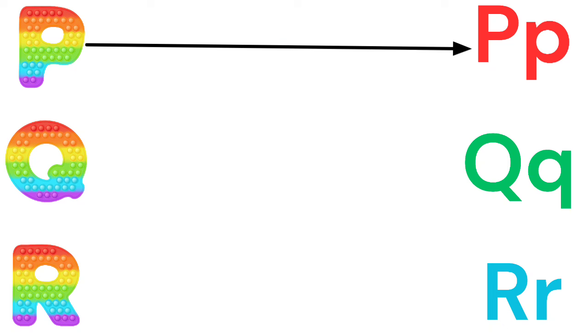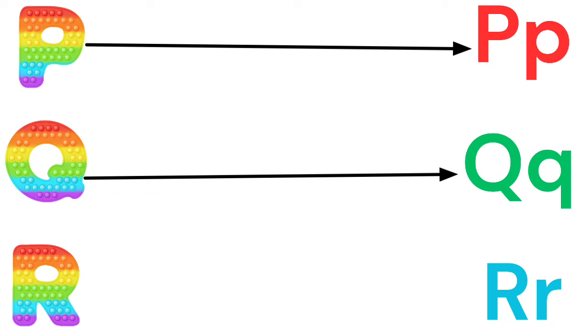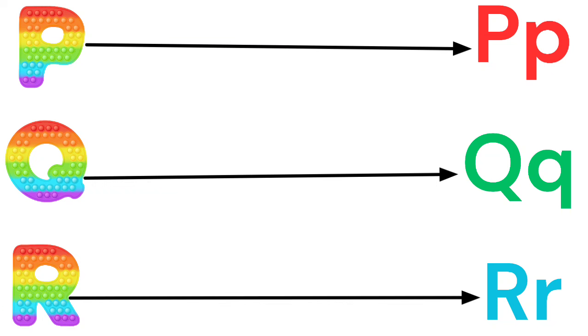P for pumpkin, Q for queen, R for rocket.